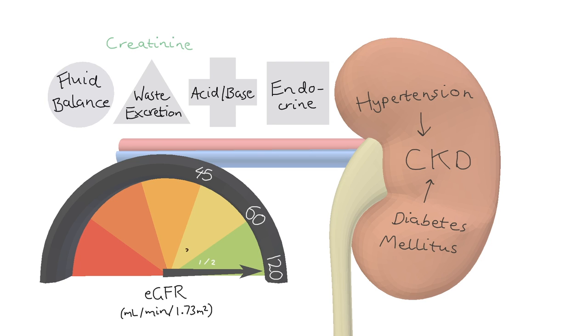GFR 60 to 45 is stage 3a. 45 to 30 is stage 3b. 30 to 15 is stage 4. And below 15 is classified as stage 5, which is also known as end stage kidney disease.